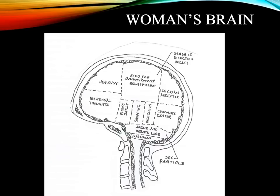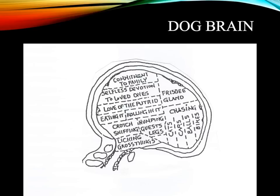Of course, this is all just a big joke and isn't actually true. And here, just for fun, is a dog's brain. Notice the enlarged frisbee gland. Obviously, this is my dog. Most dogs don't have as large of a frisbee gland, but this is my dog, of course.